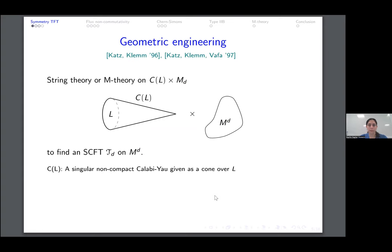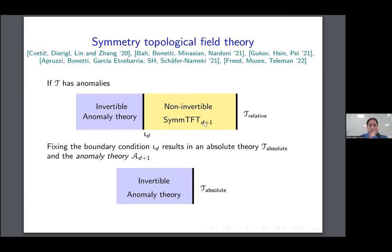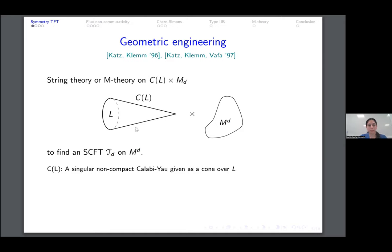The question is how can we find this symmetry TFT from string theory or M-theory. We can do this by dimension reduction. First let's look at constructing a theory in d dimensions. We can do this by putting a string theory or M-theory on a product manifold where C_L is a Calabi-Yau. It is singular and it has an asymptotic boundary — it's non-compact, so we are decoupling gravity. If we took C_L to be compact, we wouldn't find any symmetries, which is consistent with the no-global-symmetry conjecture. By reducing on this C_L, we get a theory on M_d.